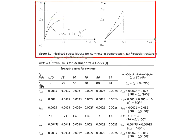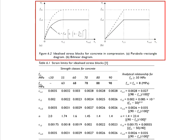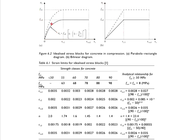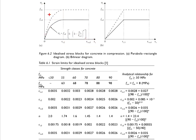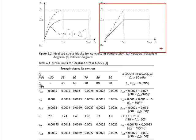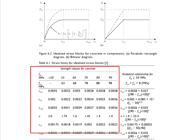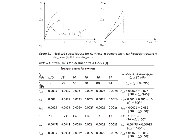The diagram here shows the idealized stress block diagram for concrete in compression. It can appear in two modes: the parabola-rectangular diagram, which has a parabolic shape, and the bilinear diagram, which is made of two straight lines. Based on the idealized stress blocks, these are the strain limits of the concrete as classified in different grades of concrete.